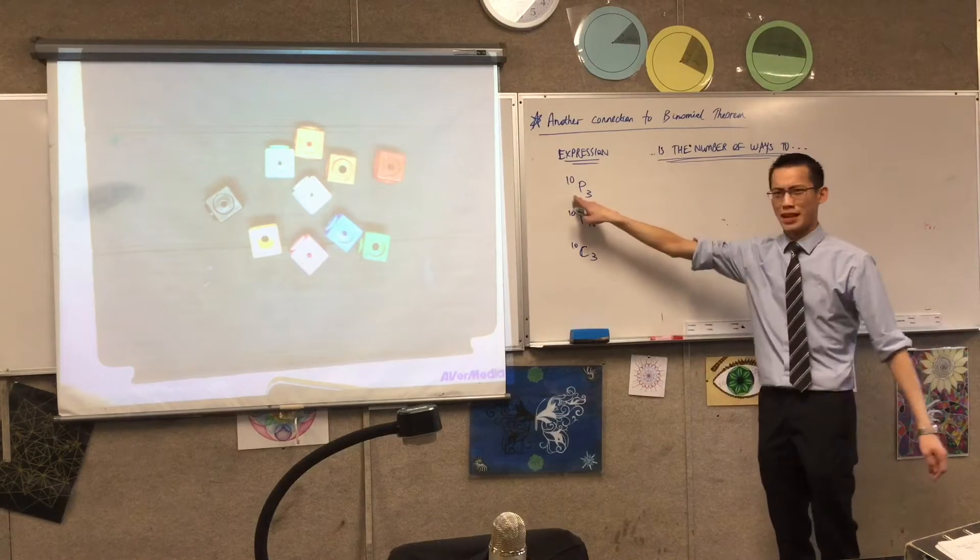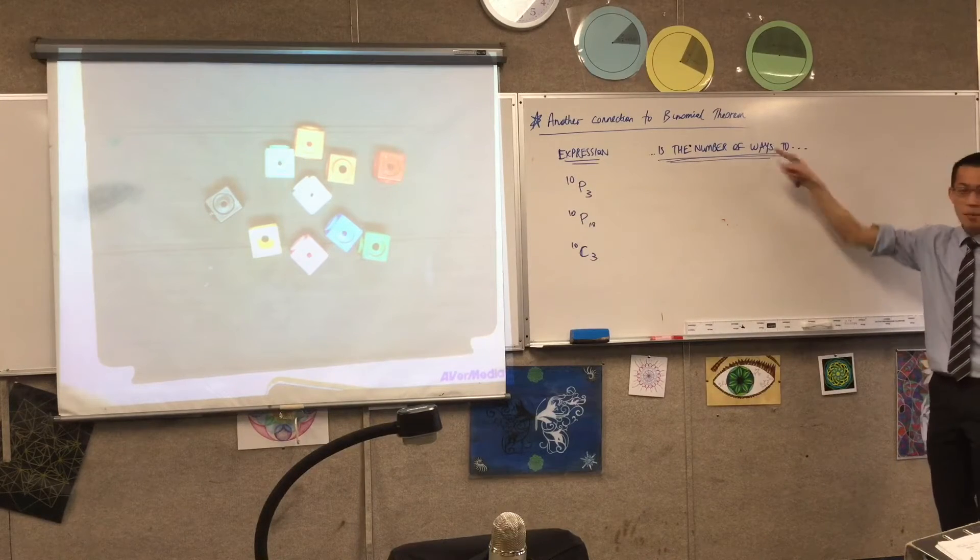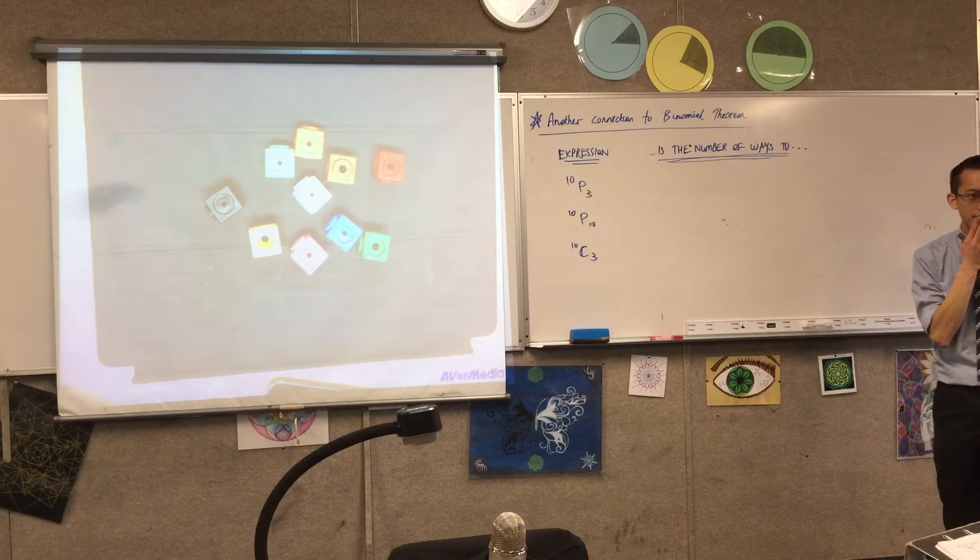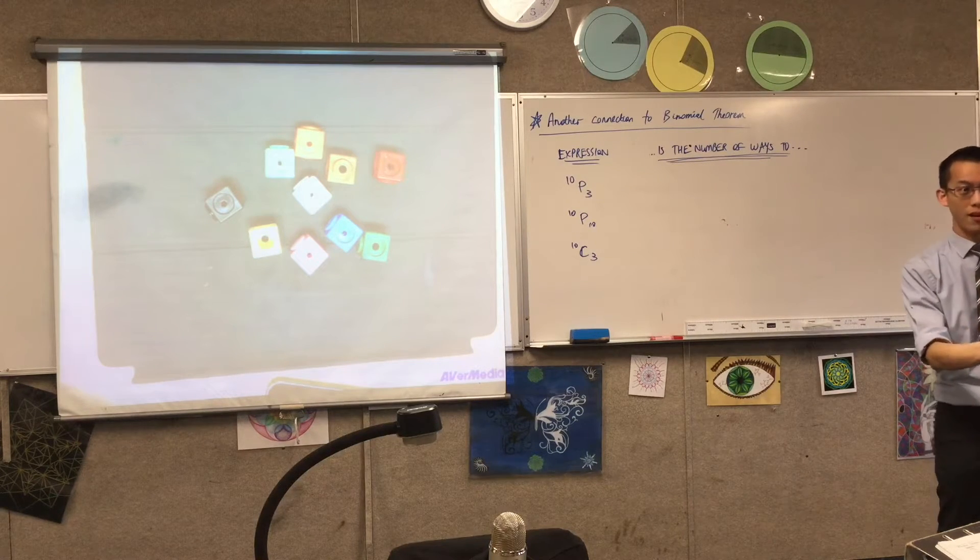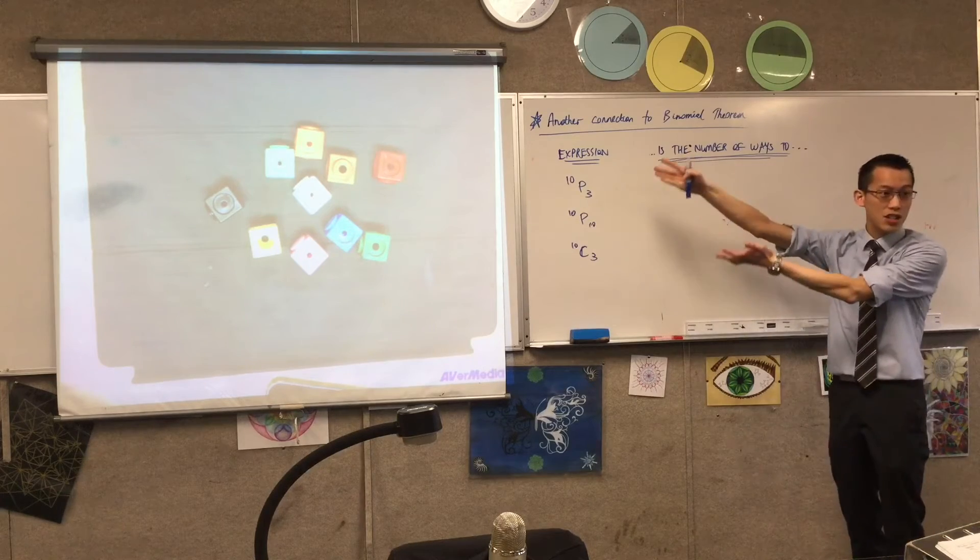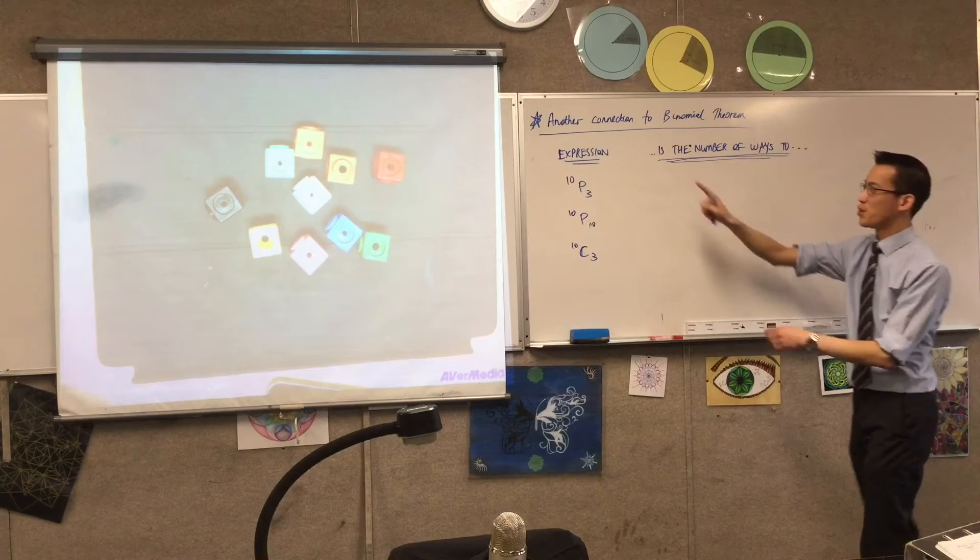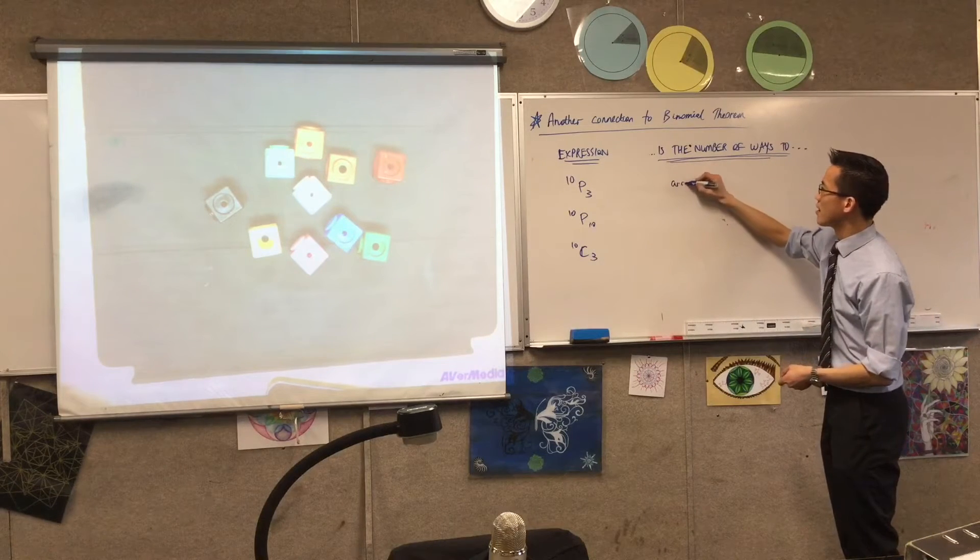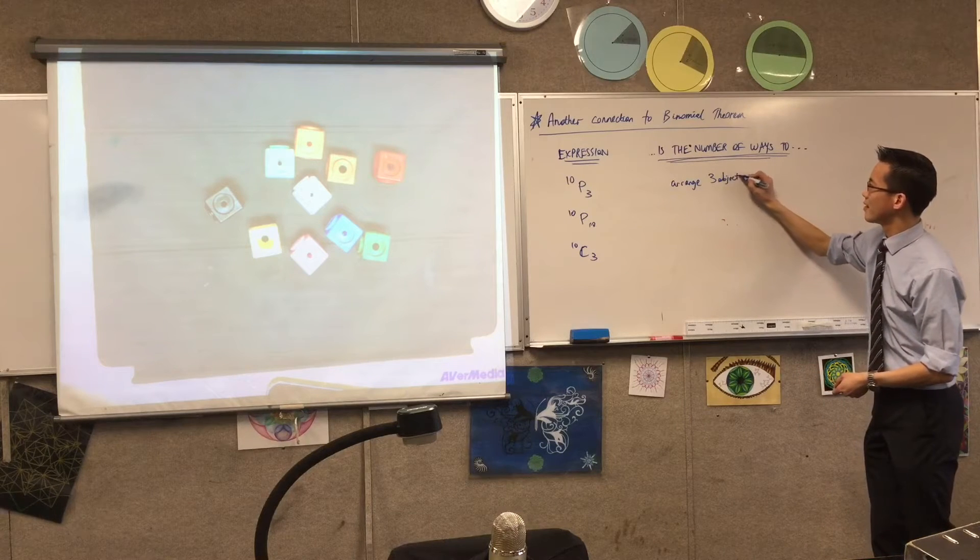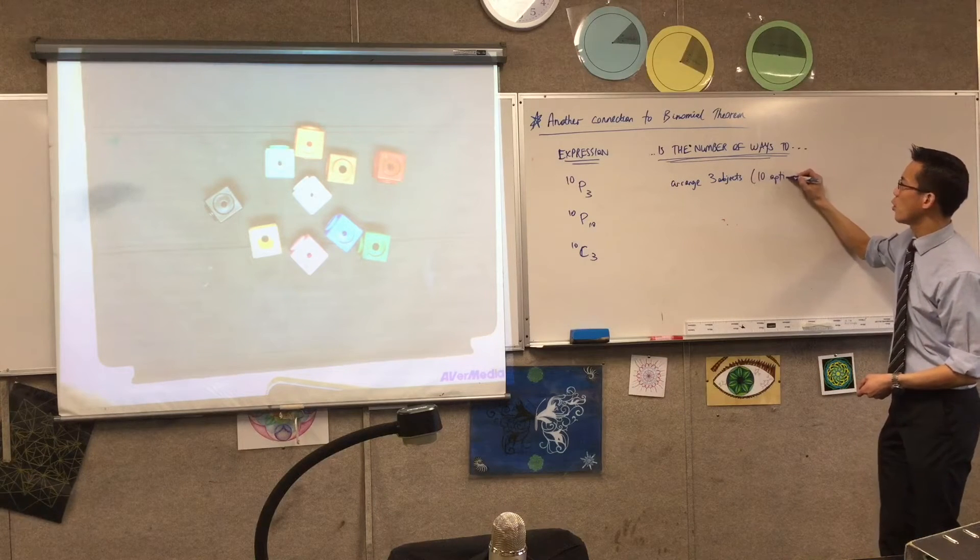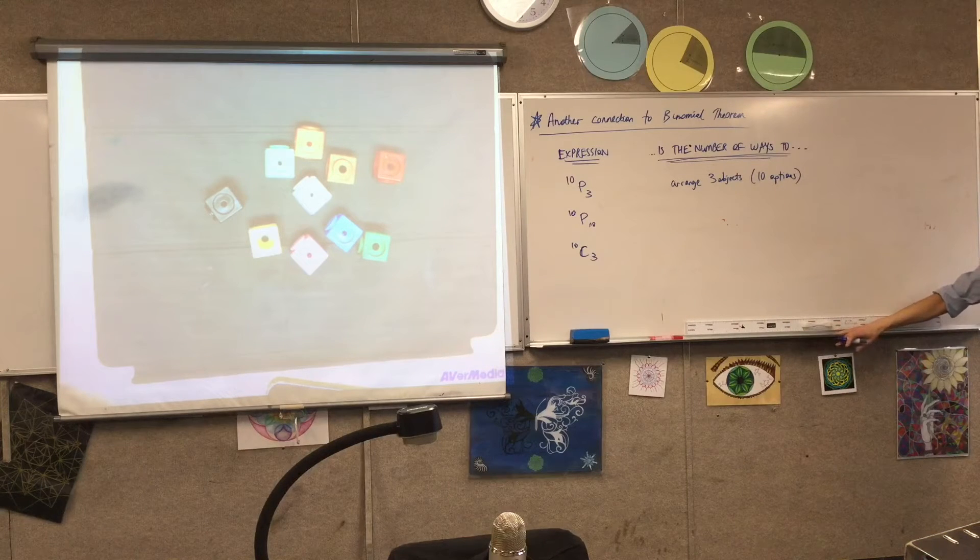So you may hear people say that, but that's why I don't say it. 10P3, how would you explain, it's the number of ways to what? Arrange 3 things out of 10 objects. Okay, yeah, so you've got 10 to choose from. I like to call them 10 options, right? So this is the number of ways to arrange 3 objects when you've got 10 that you could choose from. 10 options, right? That's fine.